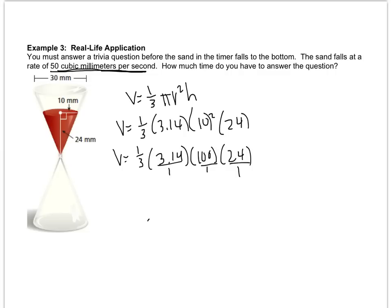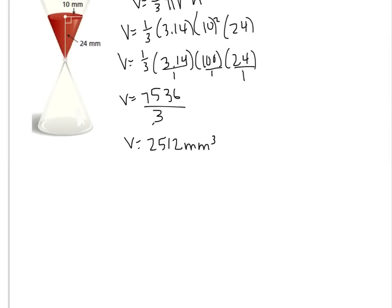Remember, we're treating these like fractions. 1 times 3.14 times 100 times 24 is 7536. When you divide that by 3, you get 2512. So 2512 cubic millimeters is the volume of the sand.